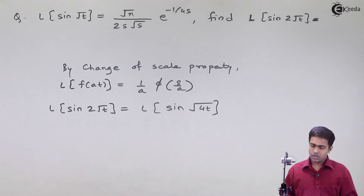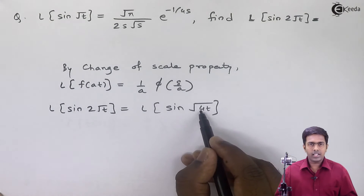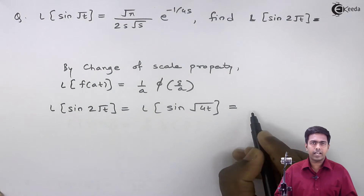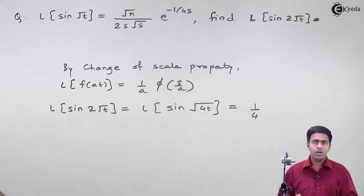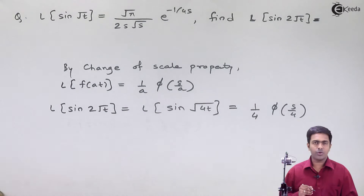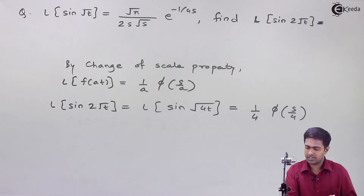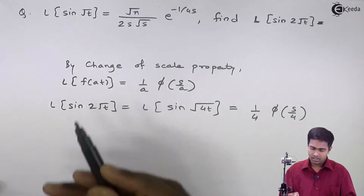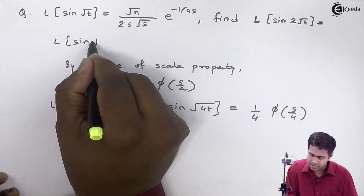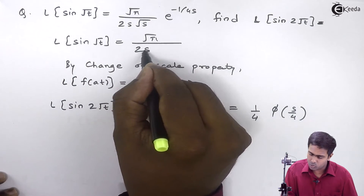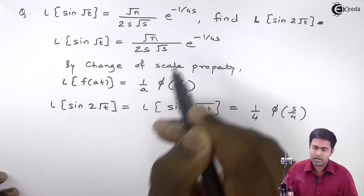My work is to convert sine 2 root t into the proper format. So the Laplace transform of sine 2 root t is nothing but Laplace transform of sine of root 4t — taking the 2 inside the root, where it gets squared and becomes 4. Now 4 is multiplying t, so we can apply the property. By property, we get 1 upon 4, because now a is 4, into phi of s by 4.